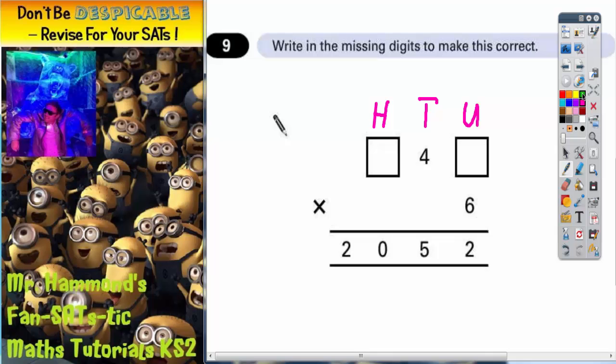Well the easiest way of doing this question is just to launch straight in and pretend you were doing it. Well, some amount of sixes make 2. Well that doesn't actually work, you can't multiply an amount of sixes to make 2. So this 2 here has got to be something that ends in 2.